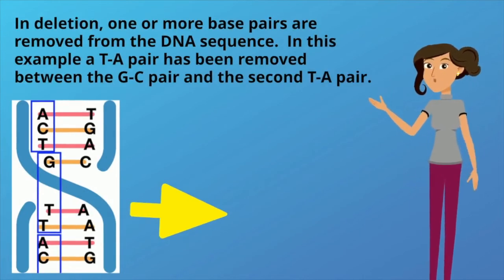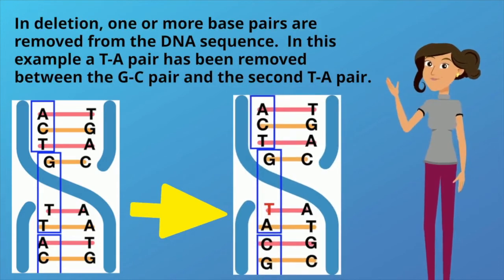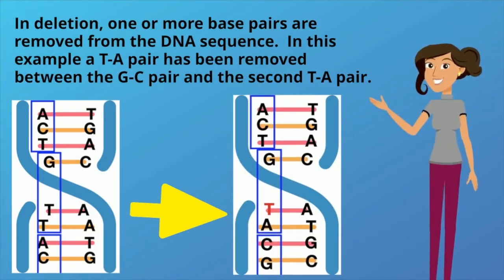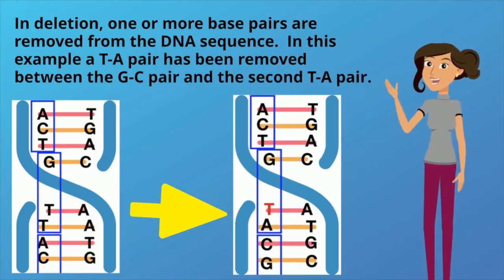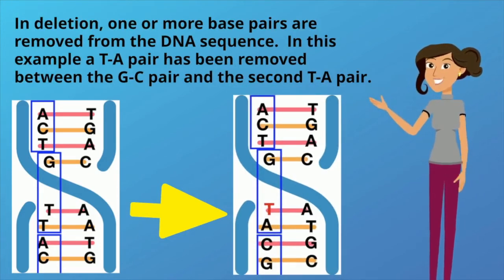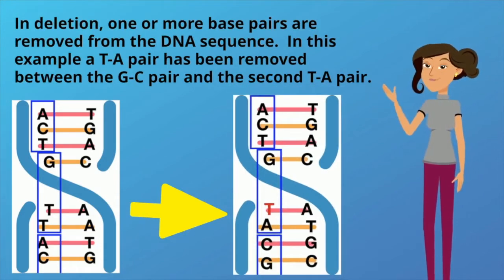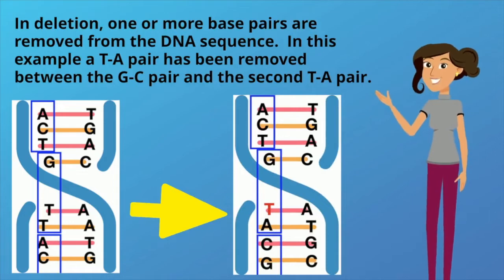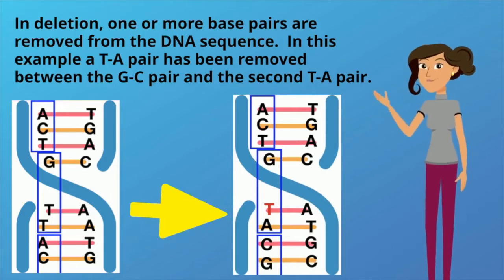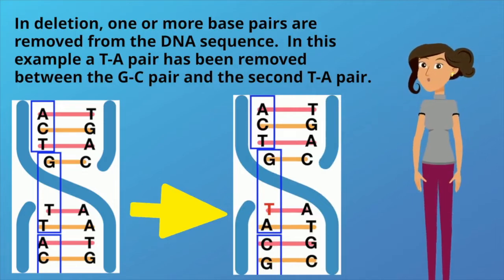And in deletion, one or more base pairs are removed from the DNA sequence. In this example, a T-A pair has been removed between the G-C pair and the second T-A pair.